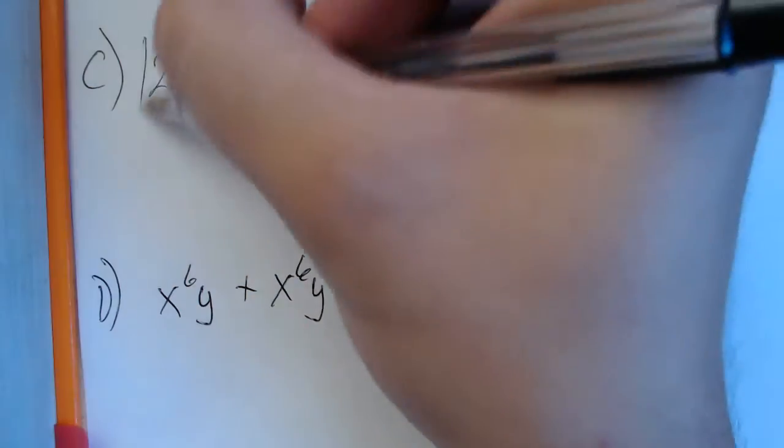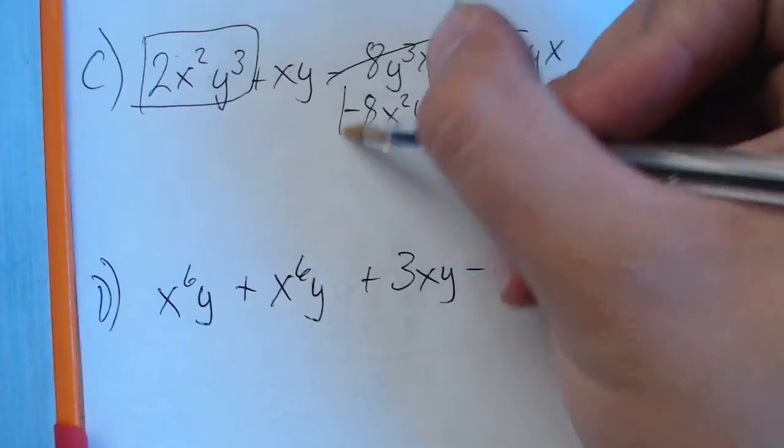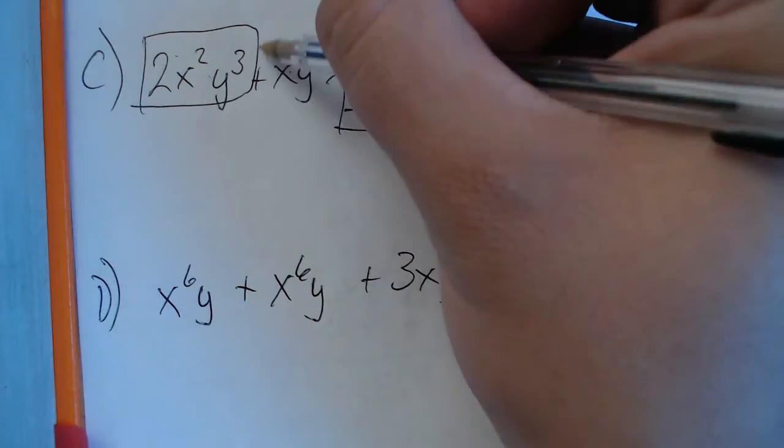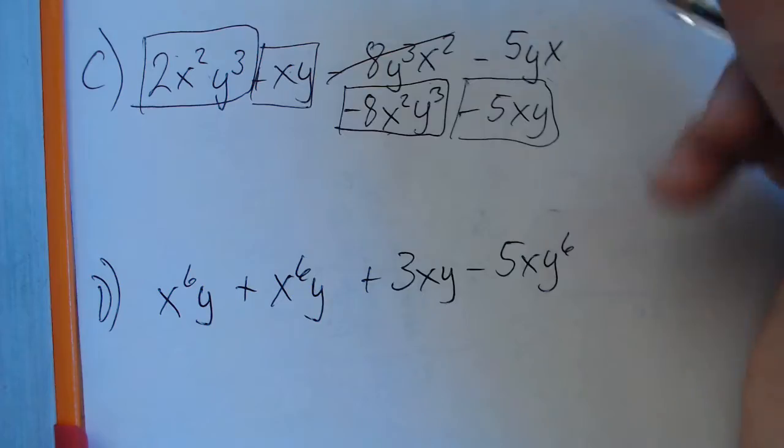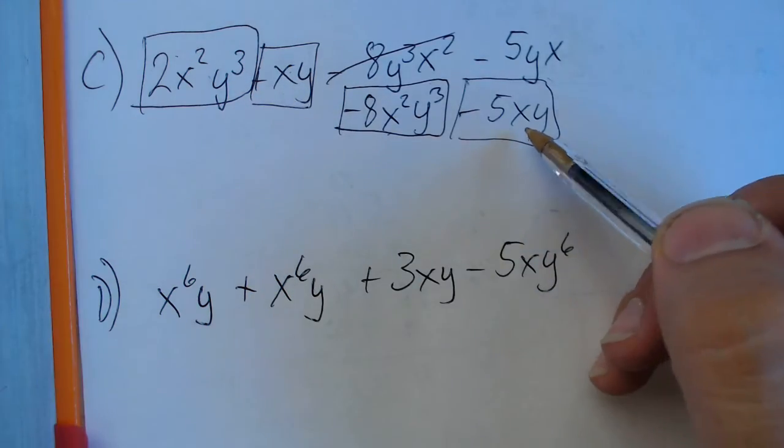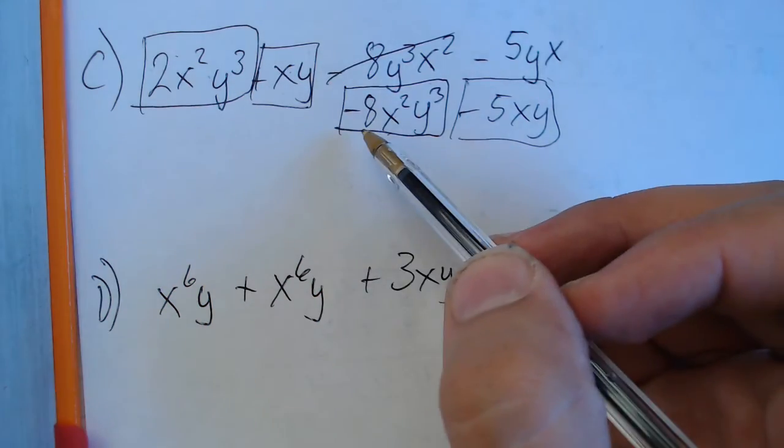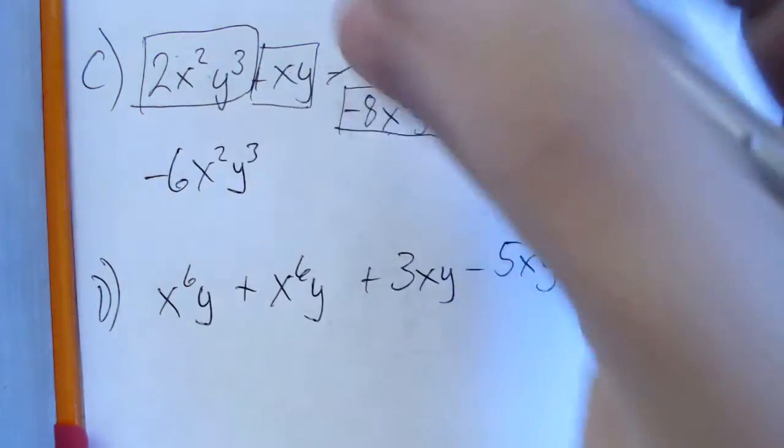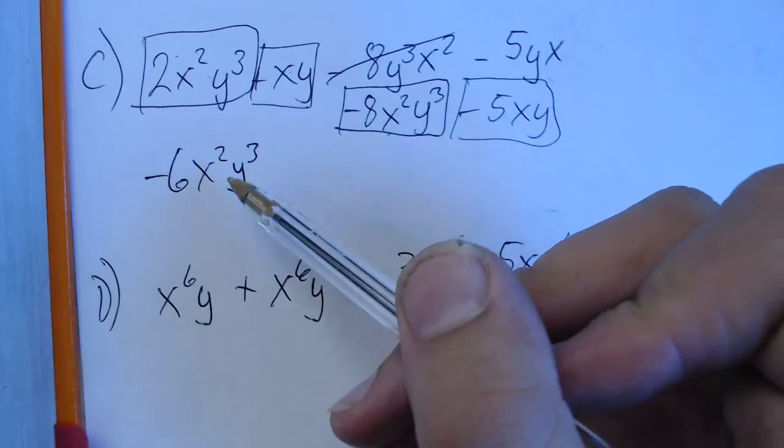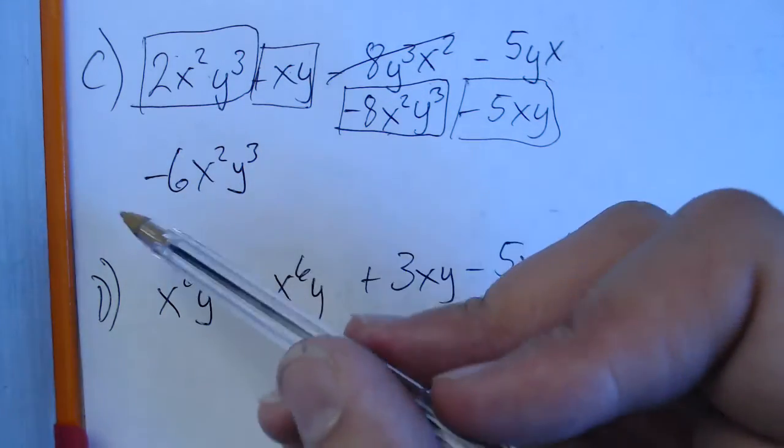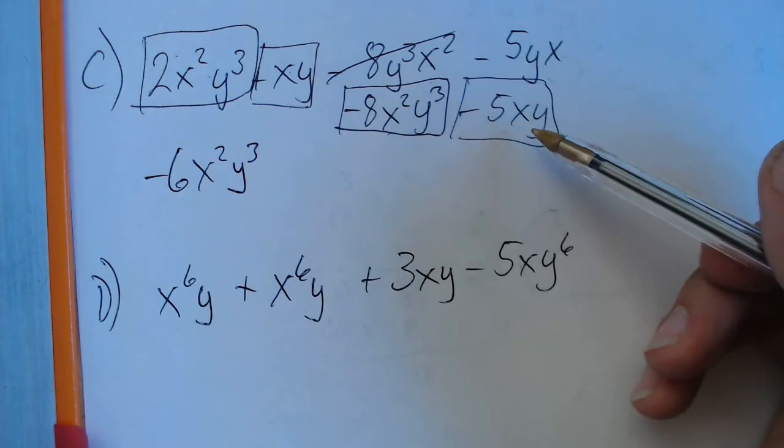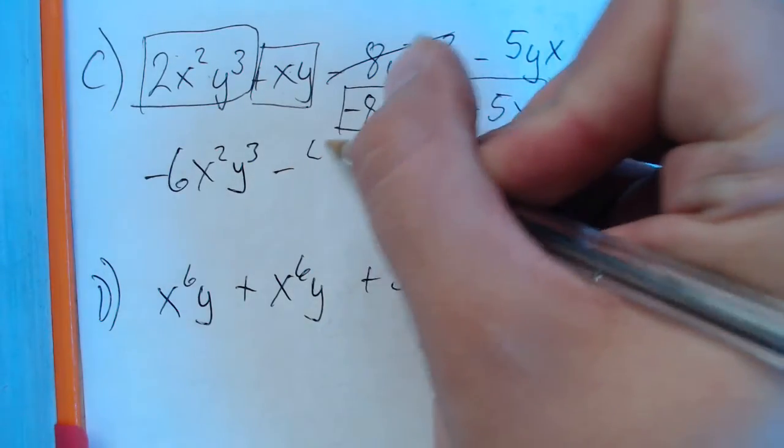Here we're going to identify like terms. The x squared y cubed are exactly the same letters with exactly the same exponents. So those are like terms. And then the 1xy and the negative 5xy are also like terms. Same letters, same number of exponents. So 2 plus negative 8 is negative 6. So we get negative 6x squared y cubed. Again, just like before when we didn't have exponents, these letters do not change at all. The only thing that changes is the coefficient. And then we have 1xy minus 5xy, which gives us minus 4xy. And that's our final answer.